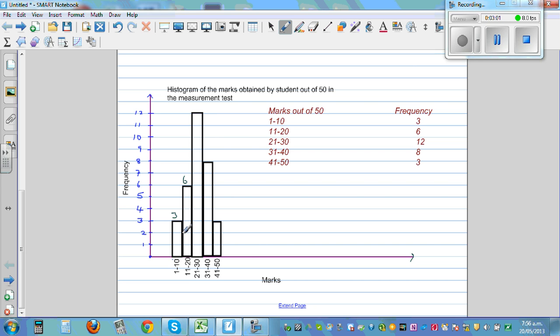So all the students who got marks between 1 to 10.999 is in this group. There were 12 students who got marks between 21 to 30.999, and so on. So this is 8 and this is 3. This is very simple.